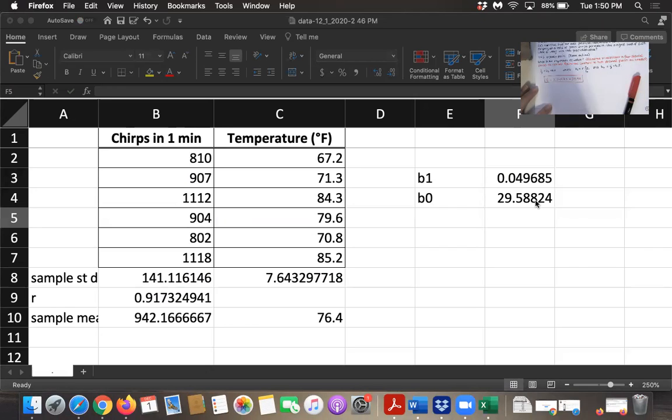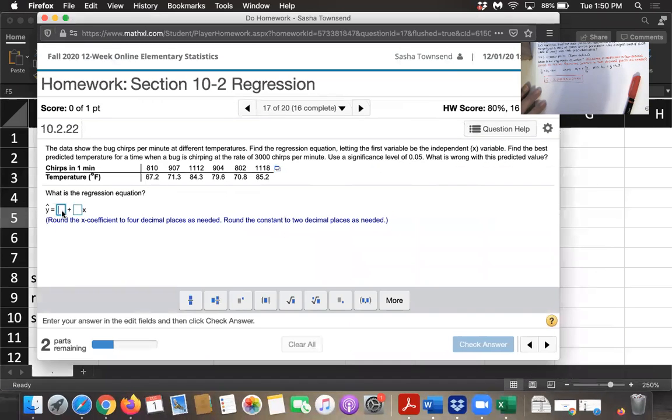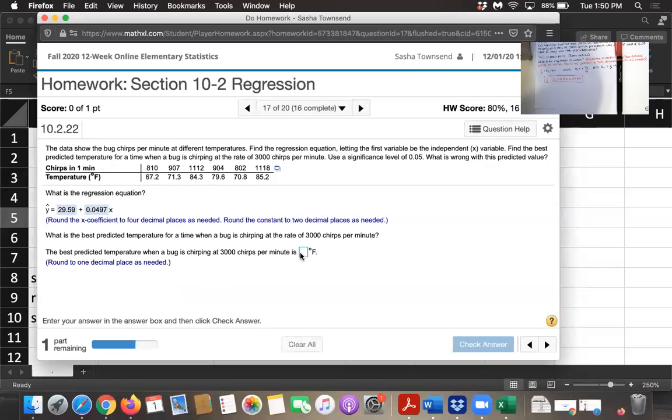That's my answer. I'm just going to type that into MyLabStatistics now. And they have the constant term first. So we type 29.59 and then they have the coefficient of x 0.0497. And then we'll click check answer. See, very easy.